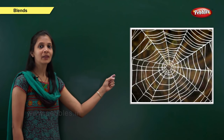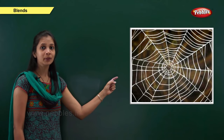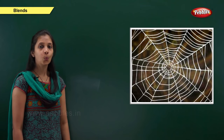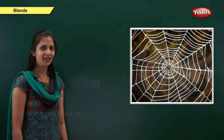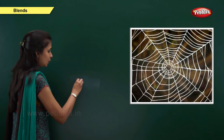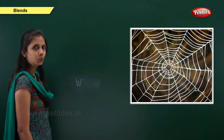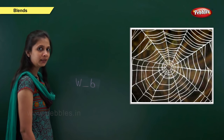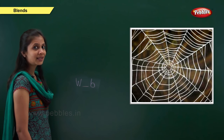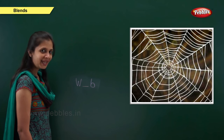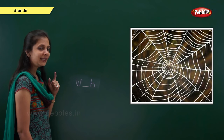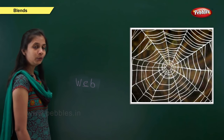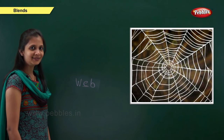Next one. Which picture is this? It is web. The sound of this word is w, a, b. When the sound is 'w', the letter is w. When the sound is 'b', the letter is b. When the sound is 'a', the letter is vowel e. So: w, e, b — web.